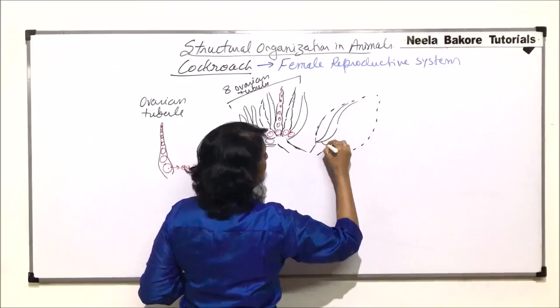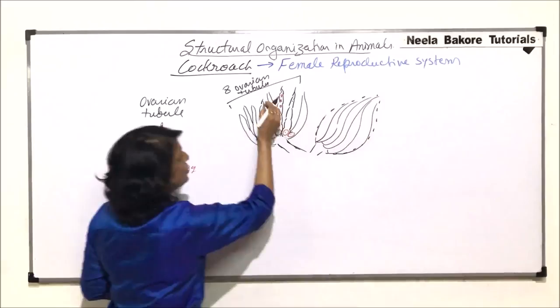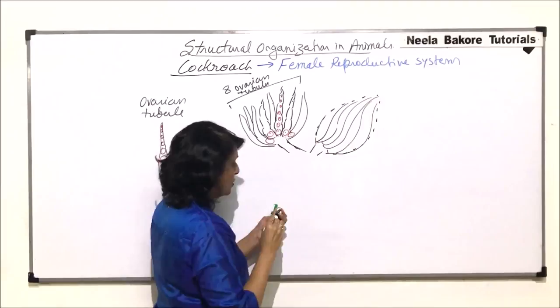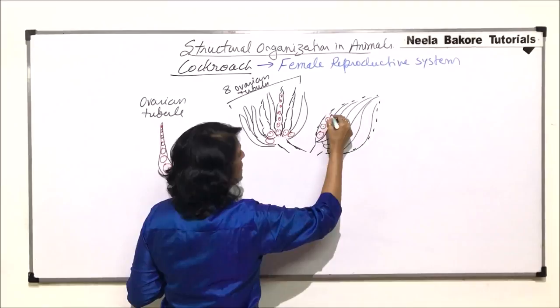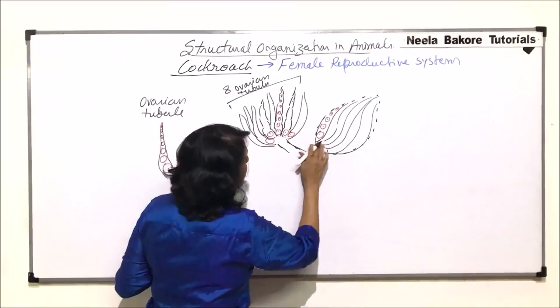That means this is one tubule, the second tubule, third, and so on. So the tubules can be arranged in this manner also — they can be spread out or they can be converging. Here also it's going to be the same thing: the fully formed egg would be towards the terminal end and this would have the developing stages.